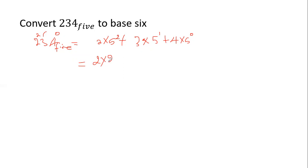So 2 times 25 is 50, plus 3 times 5 is 15, plus 4 times 1 is 4. This would be equivalent to 50 plus 15 is 65 plus 4 is 69.